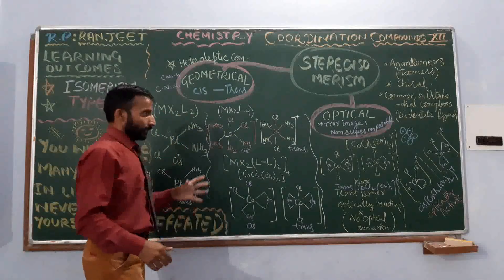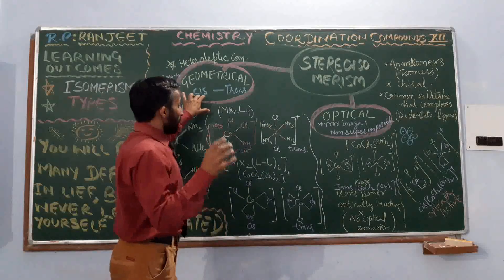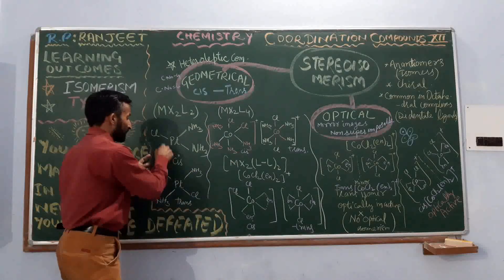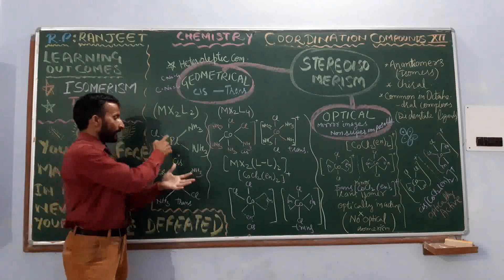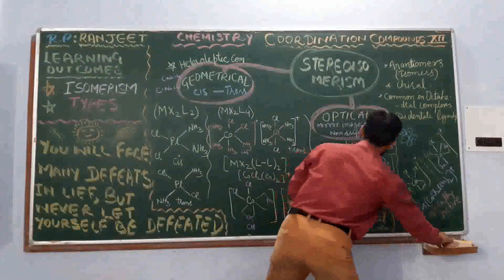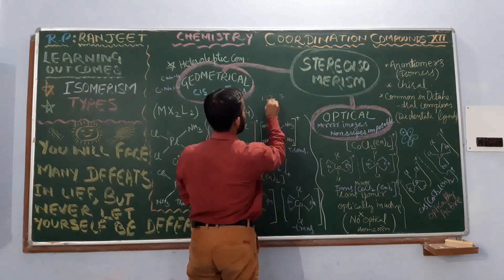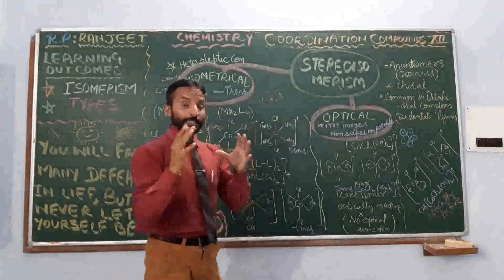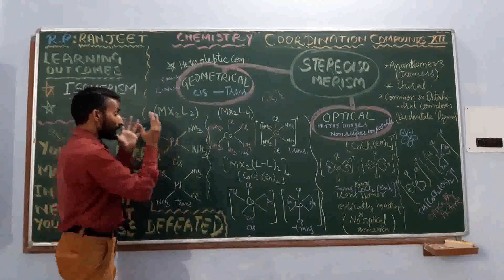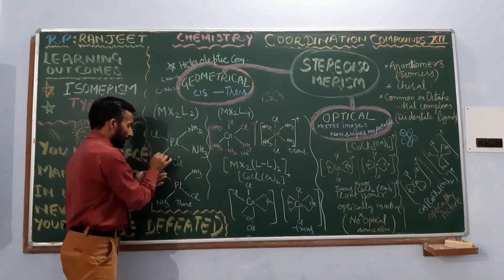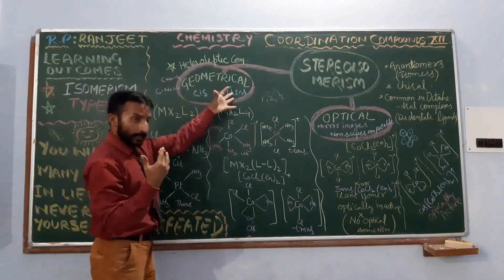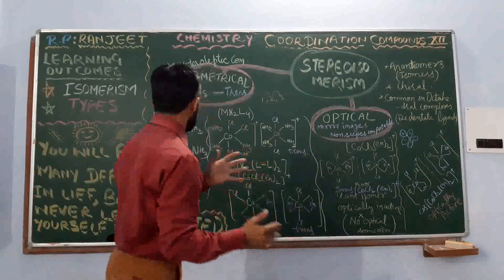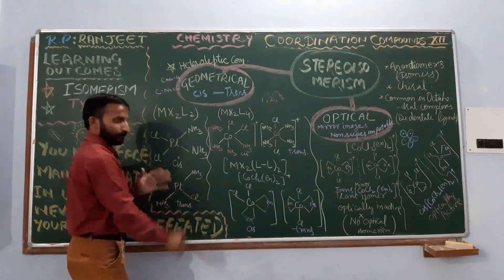In the cis form, two similar ligands are present adjacent to each other. In the trans form, similar ligands are diagonally opposite to each other. For example, positions one and two are adjacent; positions that are diagonal are trans. So similar ligands adjacent to each other means cis, and similar ligands diagonally opposite means trans.